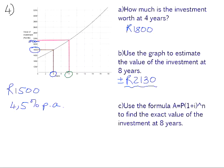use the formula A equals P into 1 plus I to the power of N to find the exact value of the investment at 8 years. So now we can see how close our estimation was.